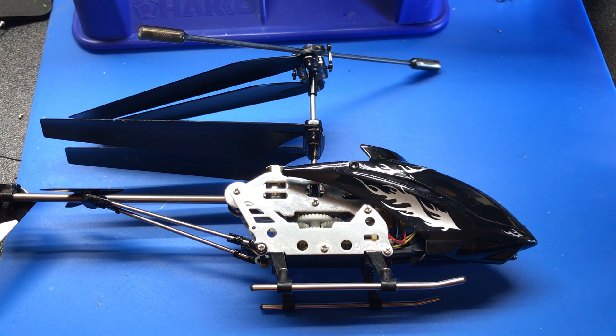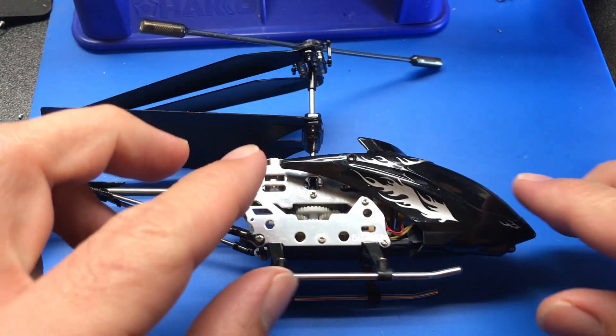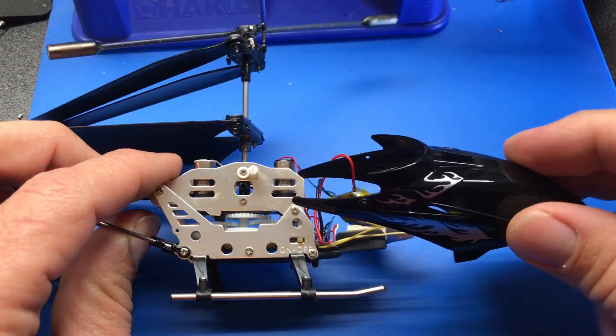What you need to do is take the screws off that are right here. There are two of them, one on each side. Pull off this nose cone and you'll get to the battery.